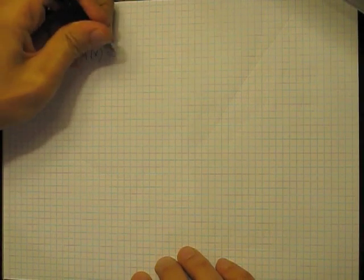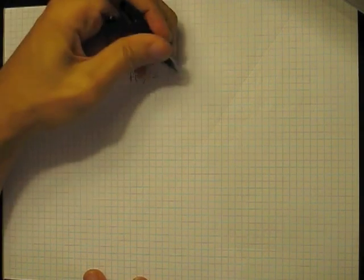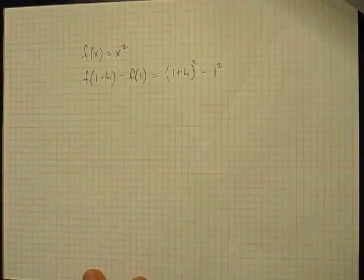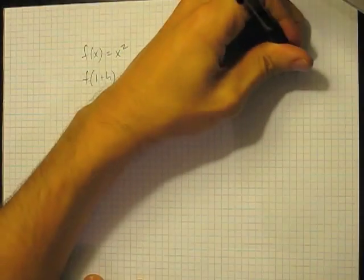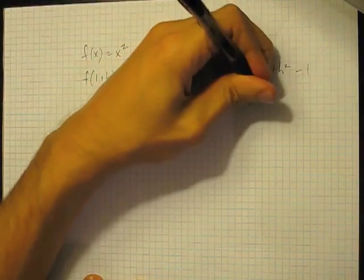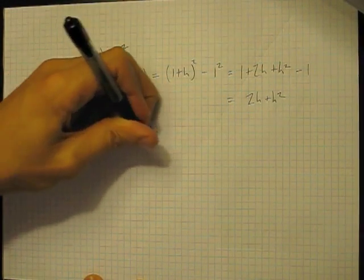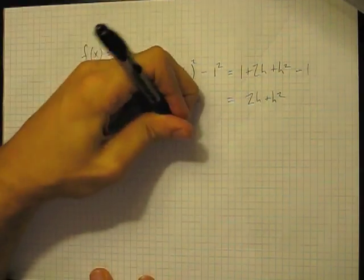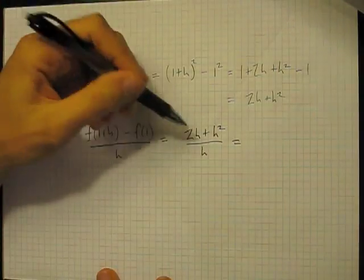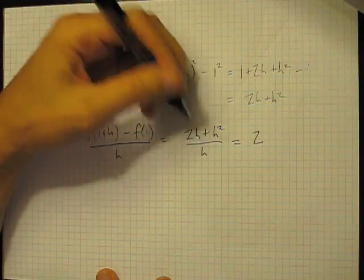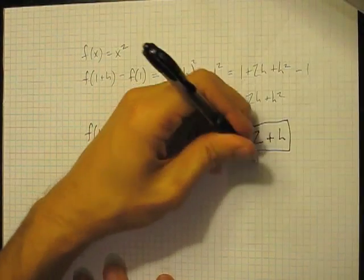So remember f was x squared. So if we take f of 1 plus h minus f of 1, this is equal to 1 plus h squared minus 1 squared. Easy enough of a calculation. This is 1 plus 2 times h plus h squared minus 1. So the whole quantity after the 1s cancel is 2 times h plus h squared. And now if we divide this by h, this should look familiar to some things we've done in class. Then what we get is 2 times h plus h squared divided by h. Now there's a common h everywhere. So this is 2. It cancels with one copy of h there and one of the two copies of h there. And so we get 2 plus h. So this is the slope of the secant.